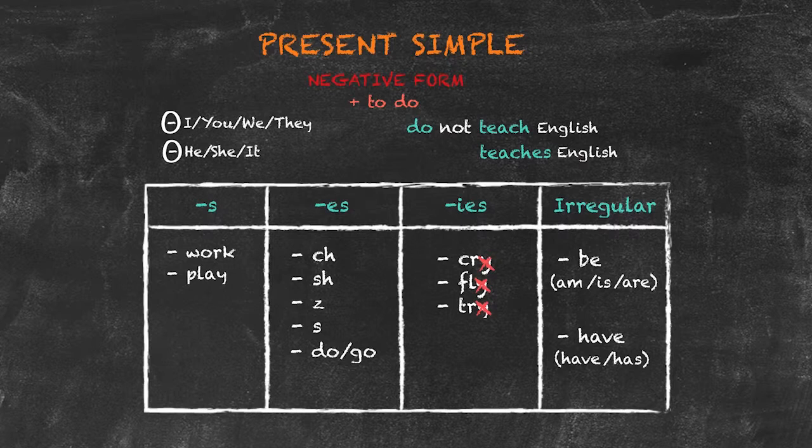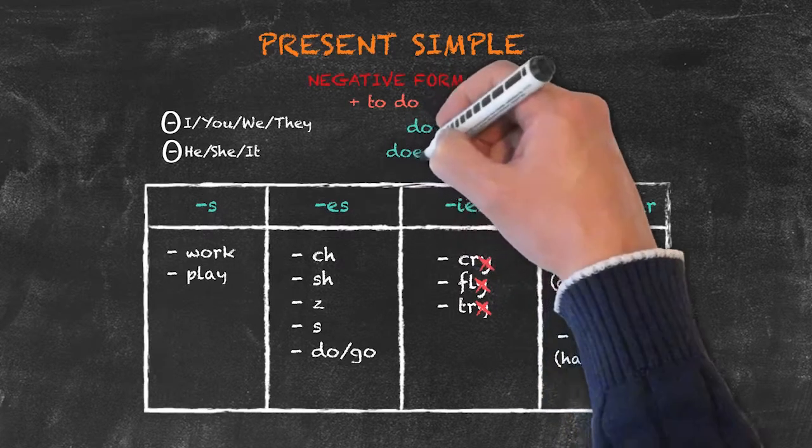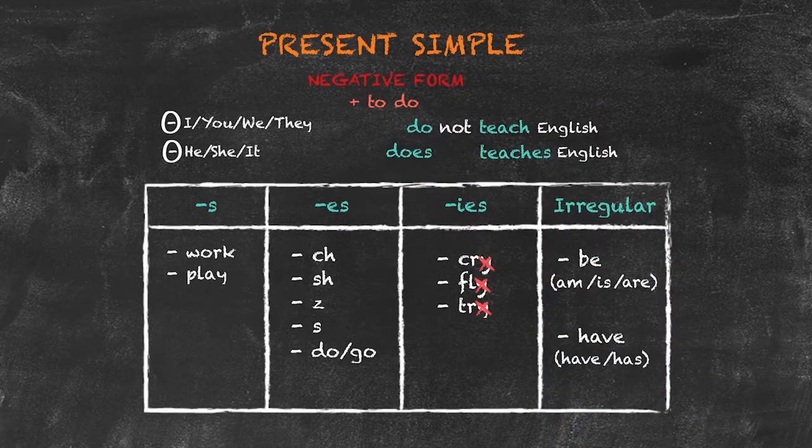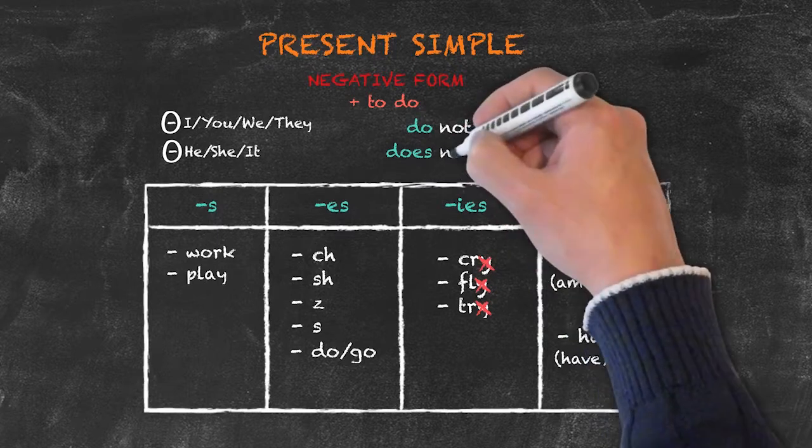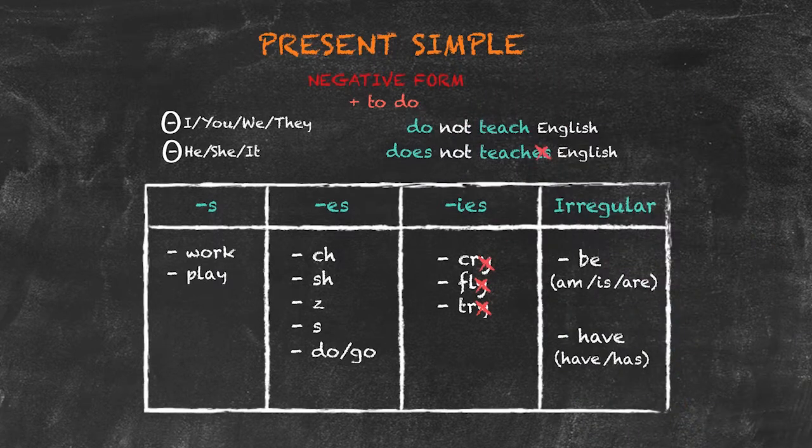However, for he, she, and it, we have to conjugate our auxiliary verb into does. We still use not, and we still keep the base form of the verb.